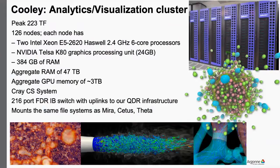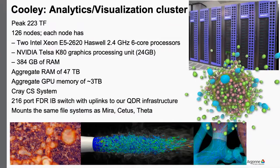A little about resources: you're familiar with Cooley, our primary analytics and visualization cluster with 126 nodes. It has NVIDIA K80 graphics cards and large amounts of memory — each node has 384 gigabytes. It also shares a network with Mira for high-speed data transfer, and it mounts the same file systems as our compute resources. Both Mira and Theta project directories are accessible from Cooley. We're also starting to do more visualization directly on Theta.